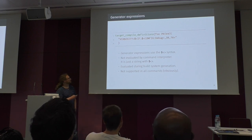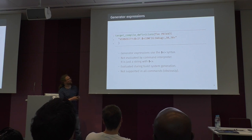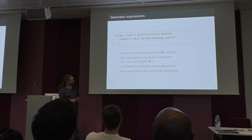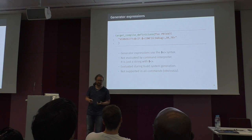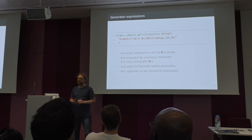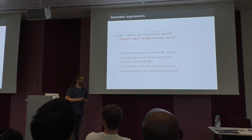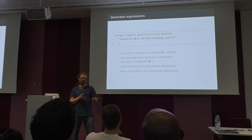CMake has generator expressions — the syntax with the $ and angle brackets. For the CMake language processor, this is just a string, which is evaluated during build system generation, so it's not supported in all commands. Generator expressions are not available in the if command because the if command is evaluated during language processing, not build system generation. They are only allowed in commands that affect targets.